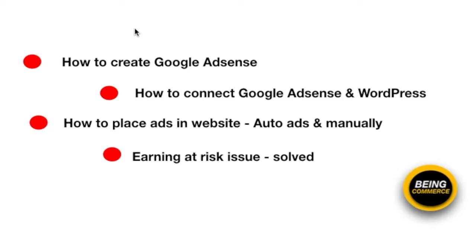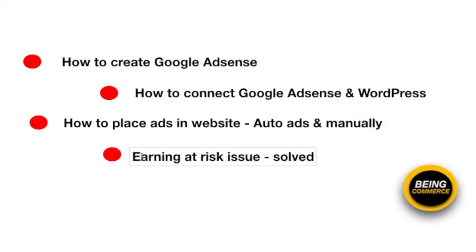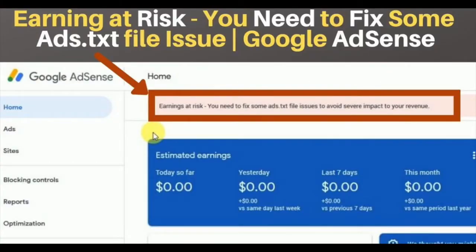In this video we will cover four things: first, how you can create your Google AdSense account; then how you can connect Google AdSense to your WordPress website; then how you can place ads using two methods — auto ads and manual ads; and also we will discuss the earning ad rates issue, which you may encounter after getting approval from Google AdSense, and how to solve it.